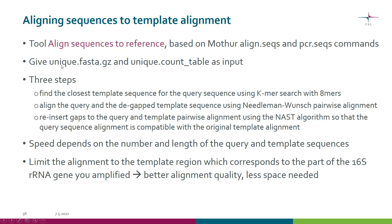As input, you need to give the unique sequences and the matching count table. The actual alignment happens in three steps. First, the tool needs to find what is the closest template sequence to the query sequence. For that, it uses KMER search with 8-mers. It basically cuts both the template sequences and the query sequences into these 8-base-long pieces and tries to figure out which sequences have the most similar 8-mer content.